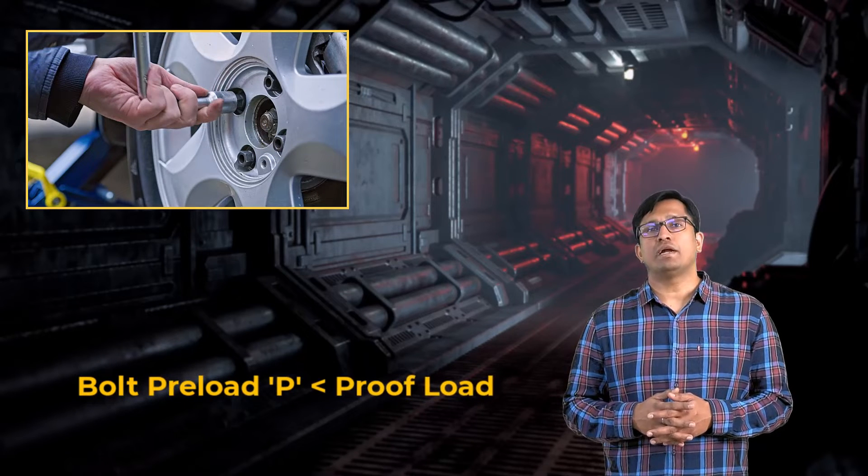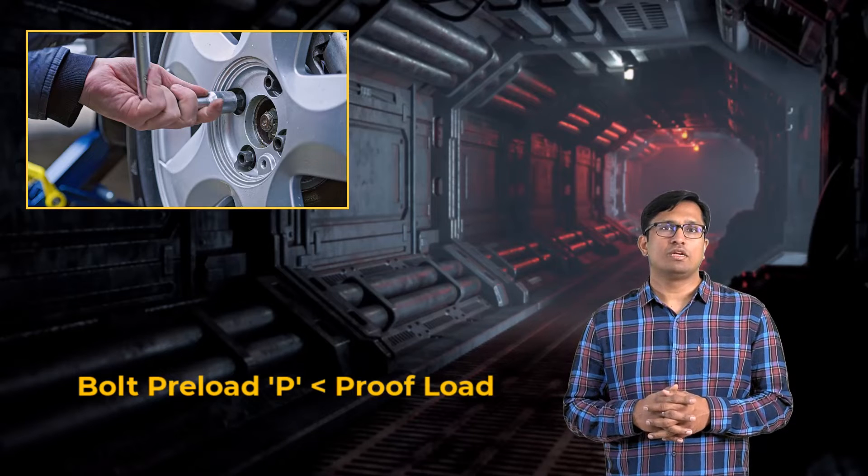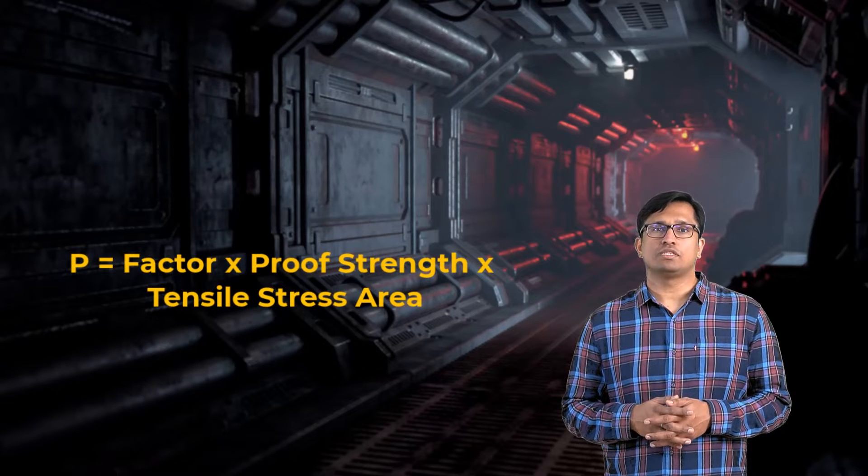The limiting value of this preload is determined by taking the proof load and the proof strength of the bolt into account. From our previous definitions, we know that proof strength and tensile stress areas of common bolts can be obtained from reference materials on bolted joints. So determining the preload for a given bolt is a straightforward process.